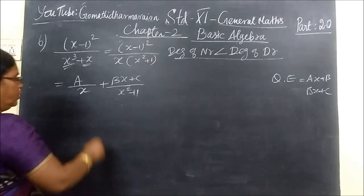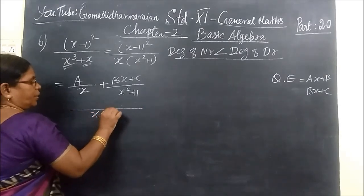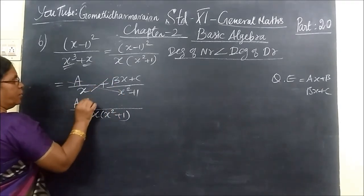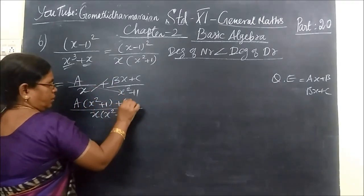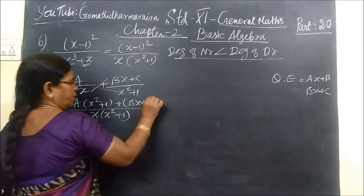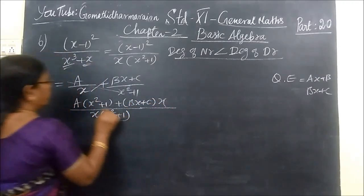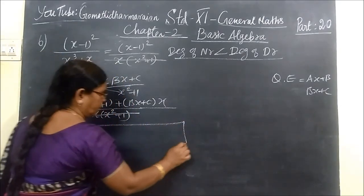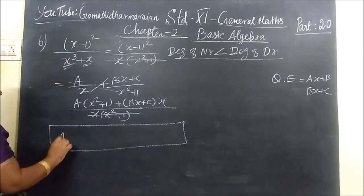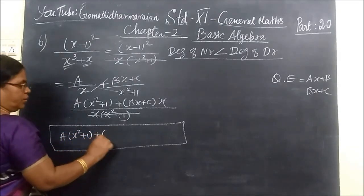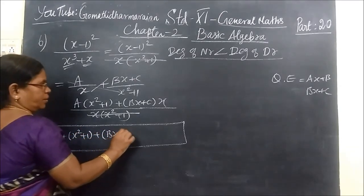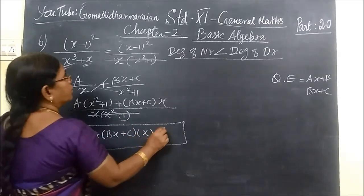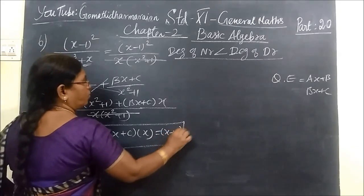Now you take the LCM x(x²+1). So cross multiply: A(x²+1) then Bx+C. Cancel. So in this box put number 1. What do you write? A(x²+1) then Bx+C. This here, equal to, in this side (x-1)². Here we have (x-1)².